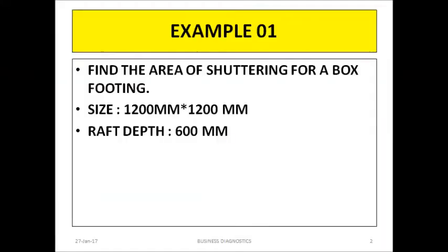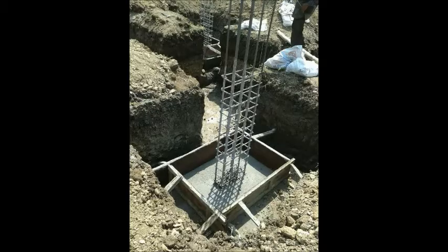This is the first example of today. There is a box footing. The size of the box footing is 1200 by 1200 mm. The depth of the raft is 600 mm. You need to tell me what is the area of shuttering. It is a very easy example. Can you calculate? Now for those who have not yet seen a box footing, I will show you. This is a box — we will be casting the concrete inside it. So this becomes a box footing, and we need to calculate these four sides.